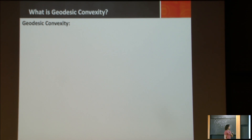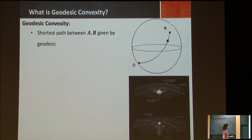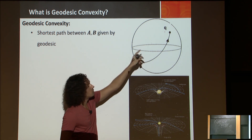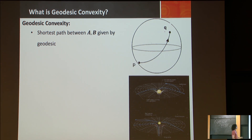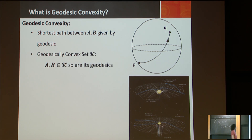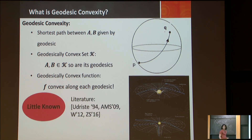As we'll see in the second part of the talk, it turns out this norm minimization problem, even though it's not convex in the usual Euclidean geometry, is geodesically convex — convex in a more general way. Now the shortest path between a and b is given by a geodesic. The intuition is: if you're on Earth going from Brazil to Russia, you go via a curve on the surface, not through the ground. A geodesically convex set has the property that for every two points, all their geodesics are in the set. A geodesically convex function is convex along each geodesic.